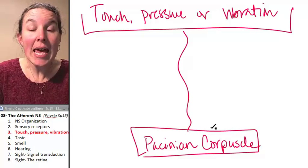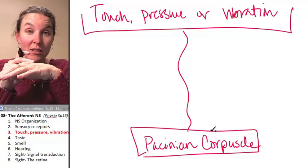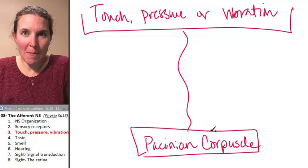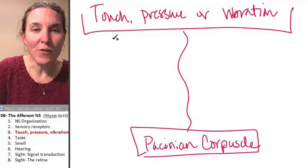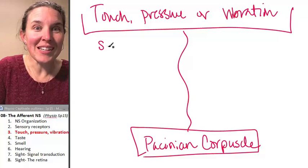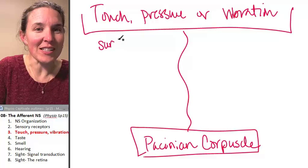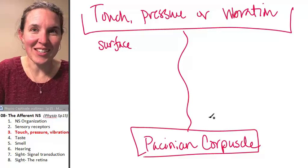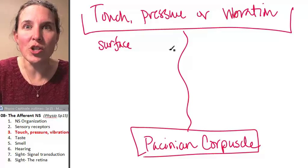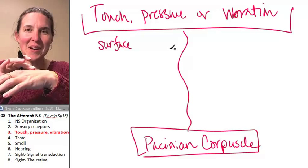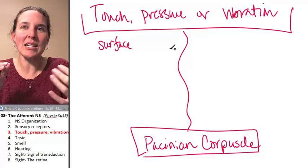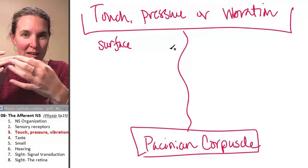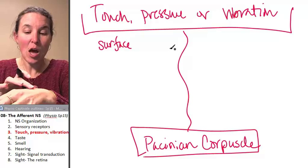Here's the thing. Let's see if you just feel touch. They're embedded in your skin. And if you feel touch, the Pacinian corpuscle is at the surface of your skin. And if you feel pressure, I mean, think about that. It kind of makes sense. If you're just feeling touch, that is only going to be detected by a sensory receptor that is close to the surface.